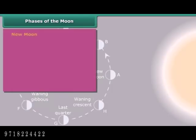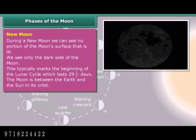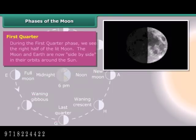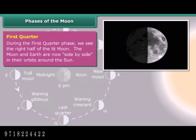Phases of the Moon. During a New Moon, we can see no portion of the Moon's surface that is lit — we see only the dark side of the Moon. This marks the beginning of the lunar cycle, which lasts 29.5 days. During the Waxing Crescent phase, we see a small sliver of the lit Moon on the right side. During the First Quarter phase, we see the right half of the lit Moon, and the Moon and Earth are now side by side in their orbits around the Sun.